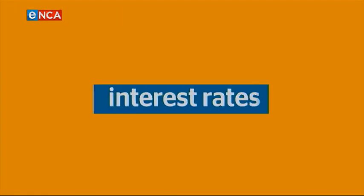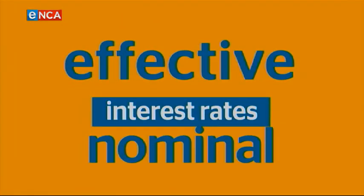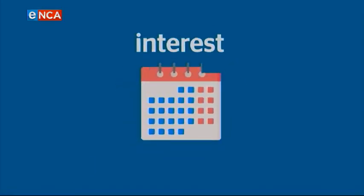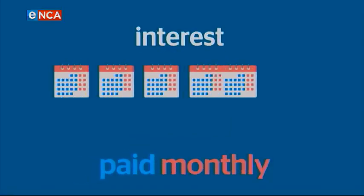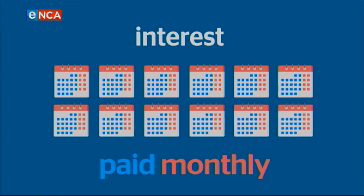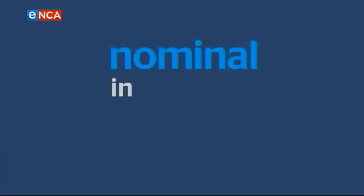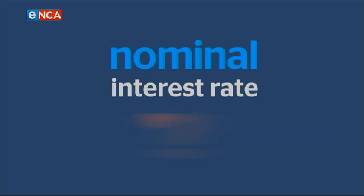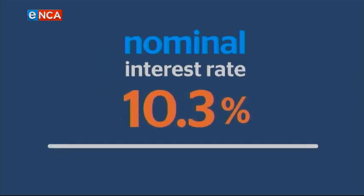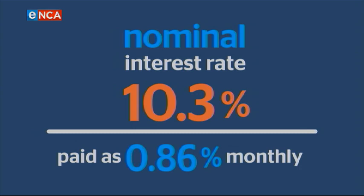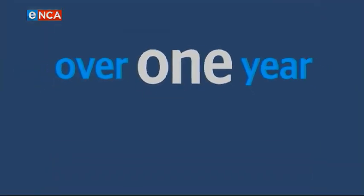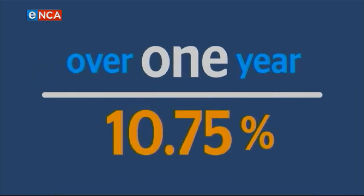Things get even more complicated when interest rates are stated as effective or nominal. As interest is actually paid monthly, there is a compounding effect even within a year. Nominal is the annual interest rate before the benefit of monthly compounding. In this example, your nominal interest rate is actually 10.3%, but this is paid as 0.86% monthly, so that each month the interest earns interest, which means over a year your effective rate will be 10.75%.